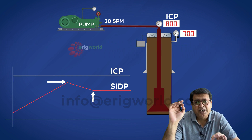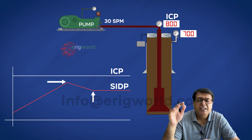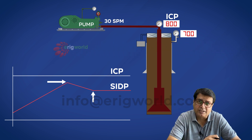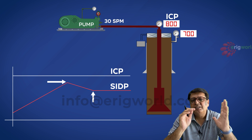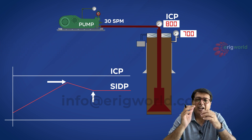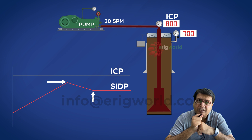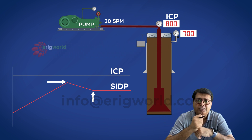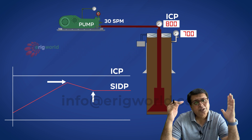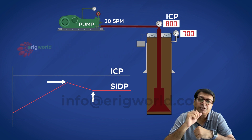As per principle, I should hold drill pipe pressure constant and when gas expands in the annulus, casing pressure should increase. This is the correct way of killing the well using the driller's method first cycle — you should allow casing pressure to increase. But the question says to hold casing pressure constant, which is different from the principle. Since the casing pressure is increasing, to keep it constant I need to open the choke, which is against principle.